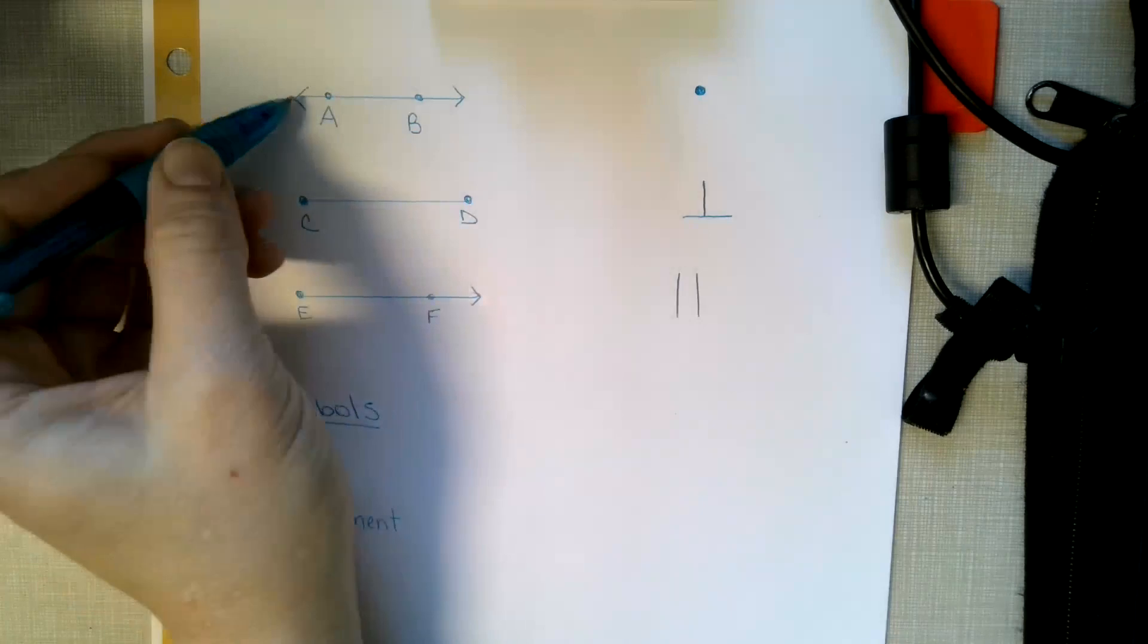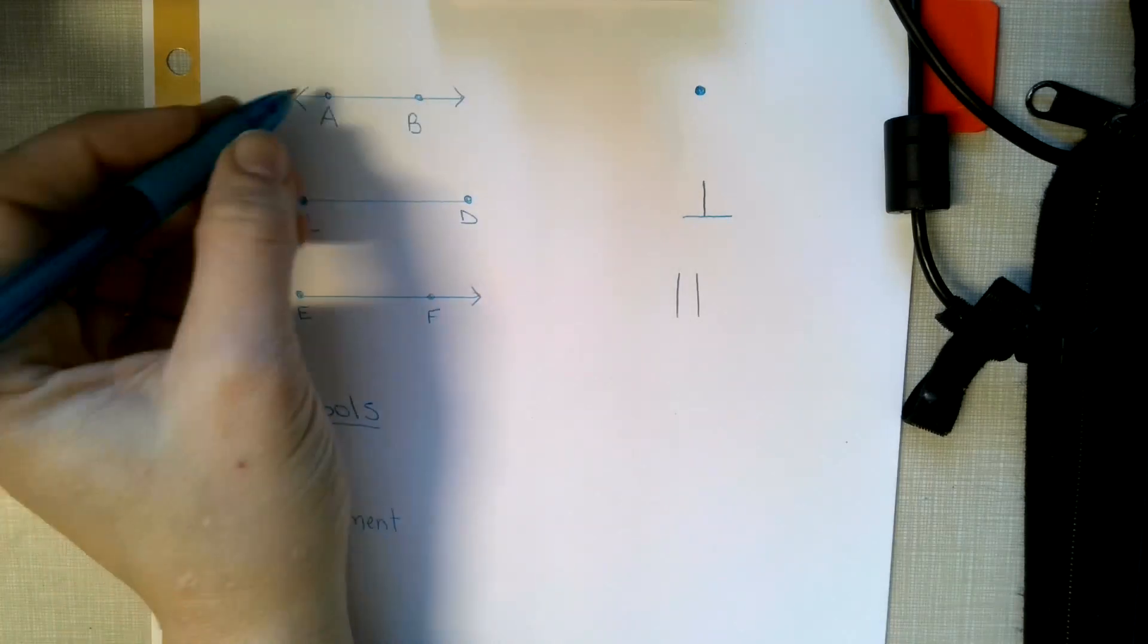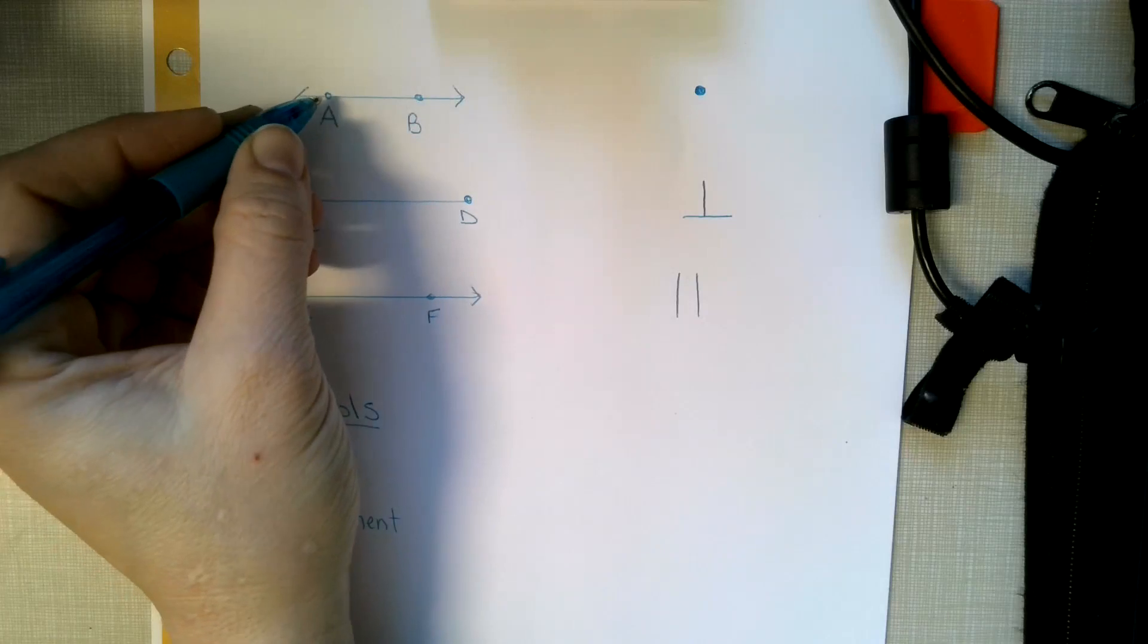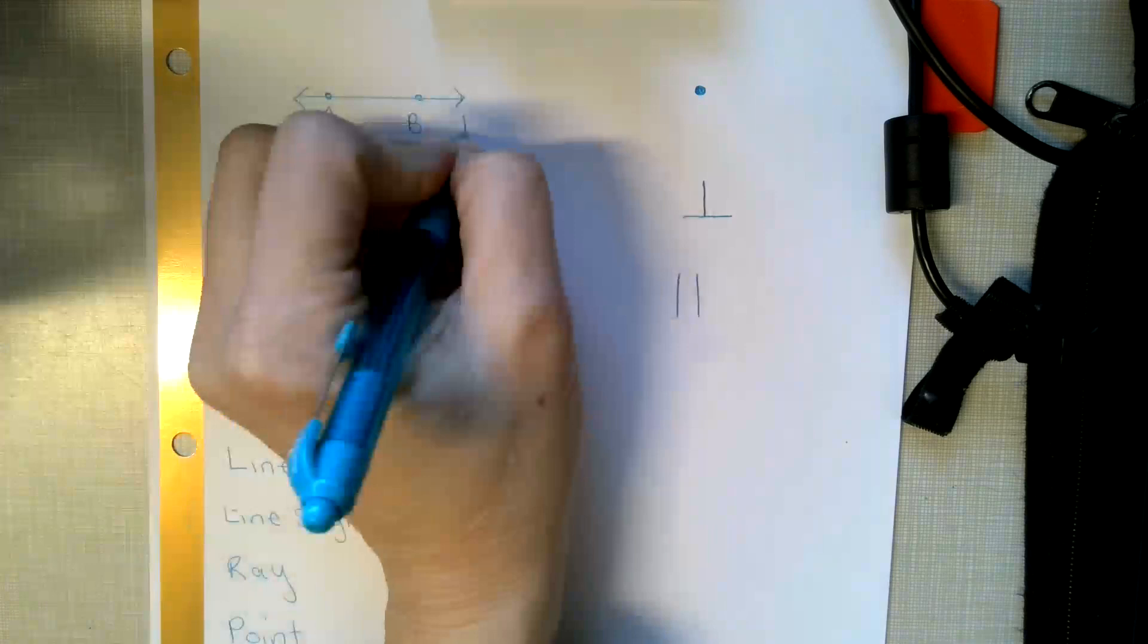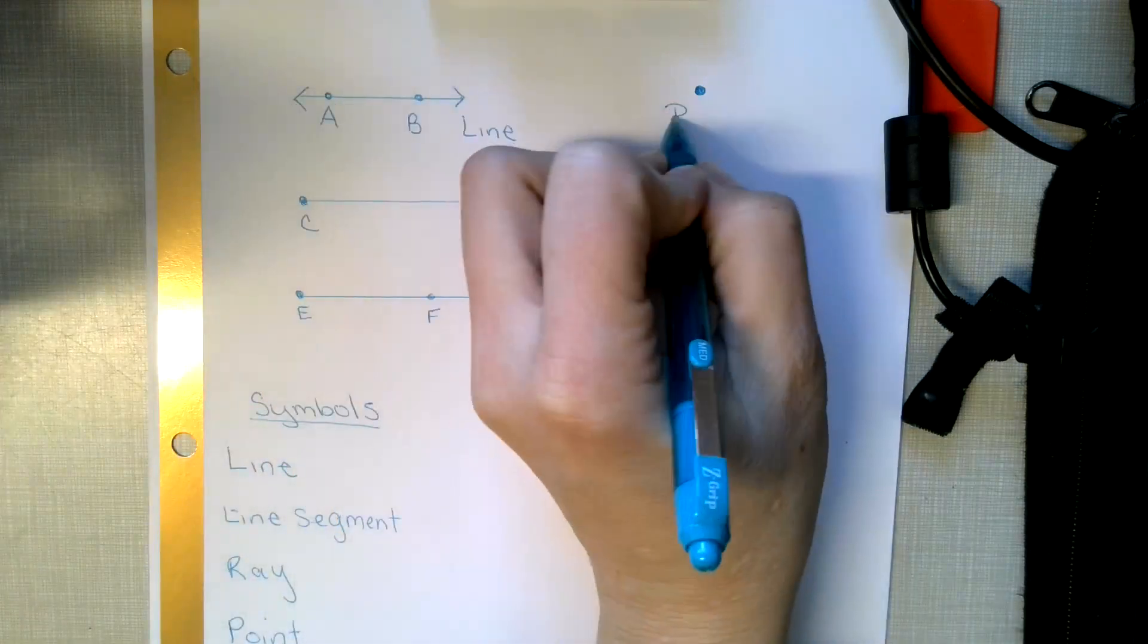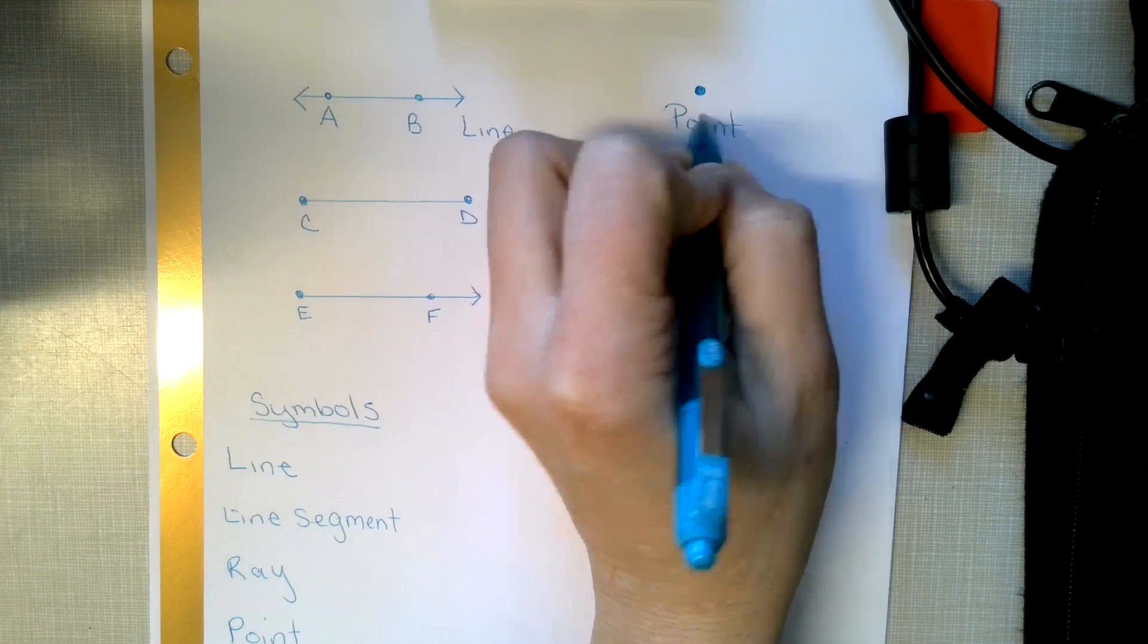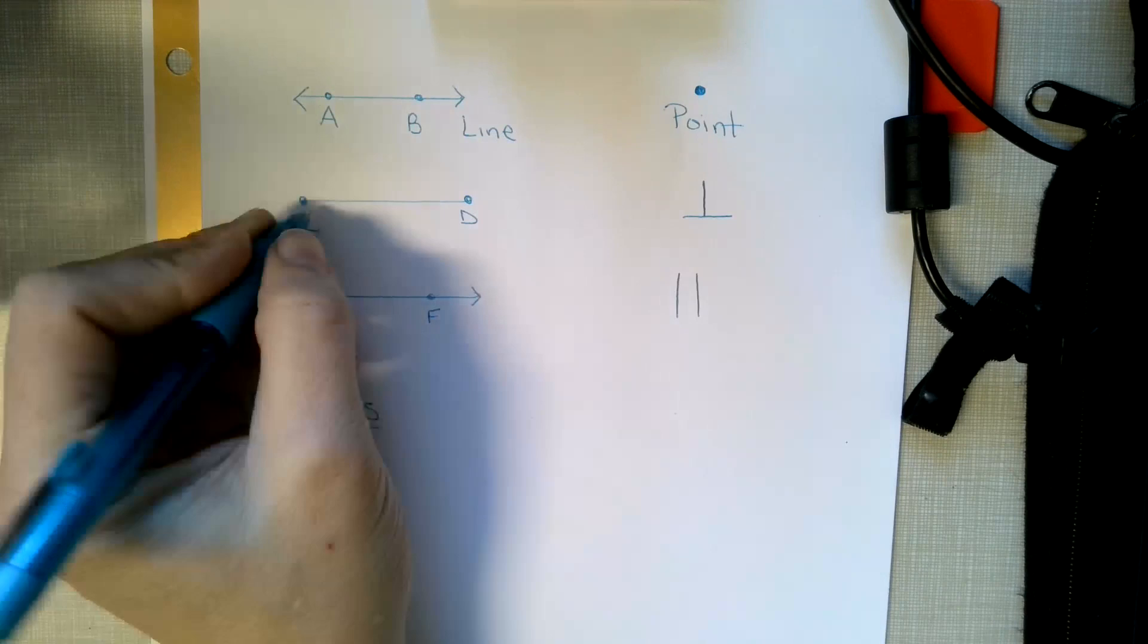So this is a picture of a line. It has arrows at both ends, so that means it's a line because it goes infinite in both directions. This is a line where this is just a plain old point, so it's a fixed location somewhere in a plane or something.